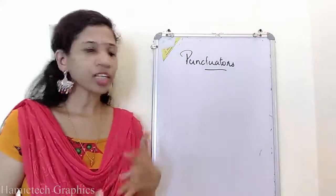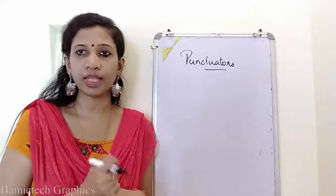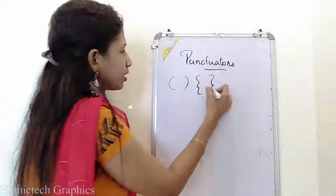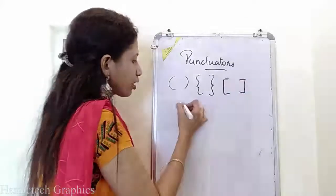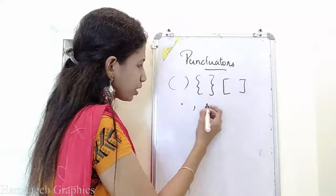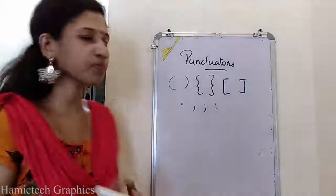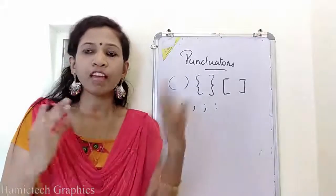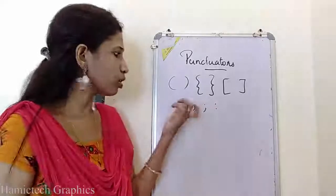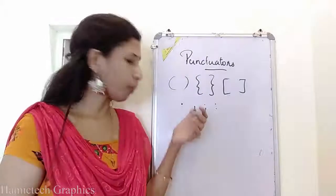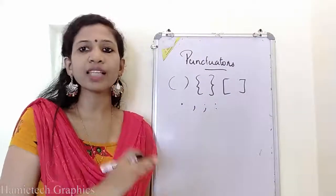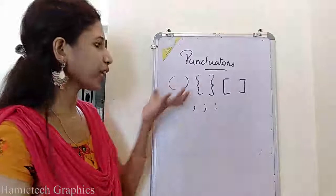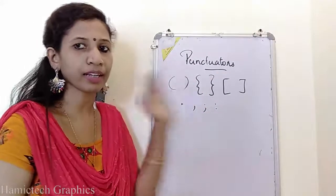The next token is the punctuators. Punctuators consist of various symbols such as curly brackets, round brackets, square brackets, full stop, comma, semicolon, and colon. All these symbols come under punctuators. They are separators — used for separating various values in programs. For example, a comma helps us to separate two values.